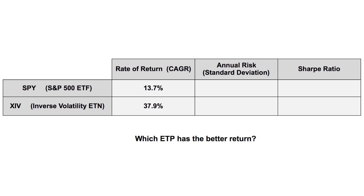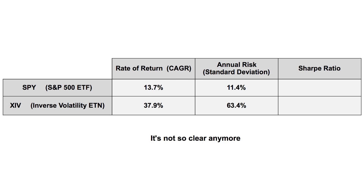So now let's look at a real example. These are the actual results of two exchange-traded products since November 30th, 2010. The first is the SPY, an ETF that tracks the S&P 500 index. The second is the XIV, an inverse volatility ETN. The XIV has gained a lot of popularity because of its high rate of return since it launched in November 2010. That's absolute performance — just the rate of return. Most people would immediately say XIV is better — nearly three times the return: 37.9% compared to just 13.7% for the S&P 500. But when we factor in the annual risk — the standard deviation of those month-to-month returns — it's not so clear anymore.